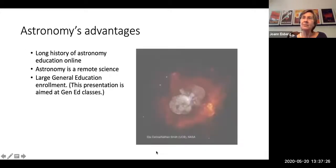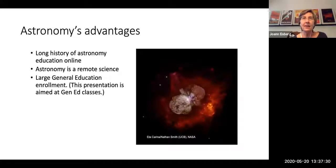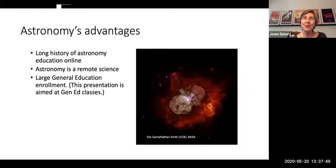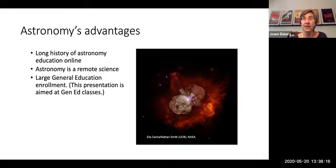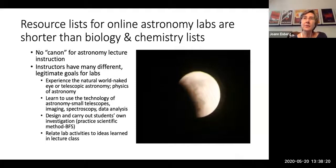Equity is subtly different from accessibility, which generally refers to ability and disability. We also need to pay great attention to whether our labs really are accessible — that's the elephant in the room and we're not there yet. Astronomy has advantages as an online subject with a history of online astronomy education going back decades, and remote instruction seems natural since astronomy is itself a remote science.